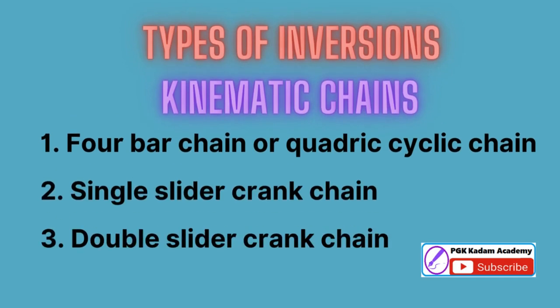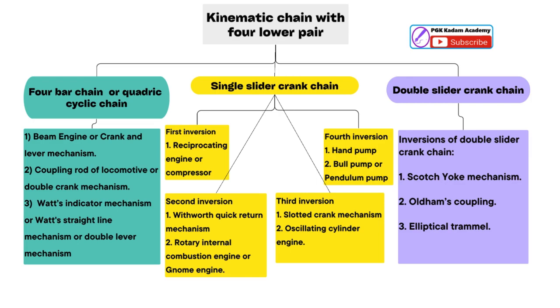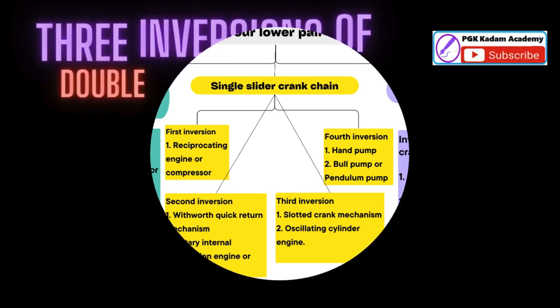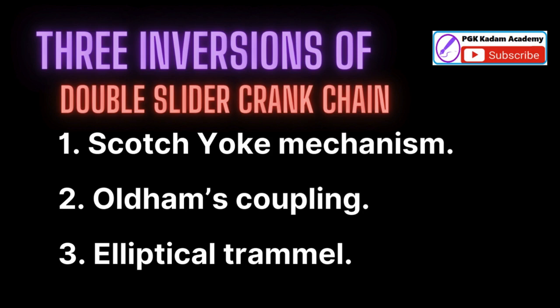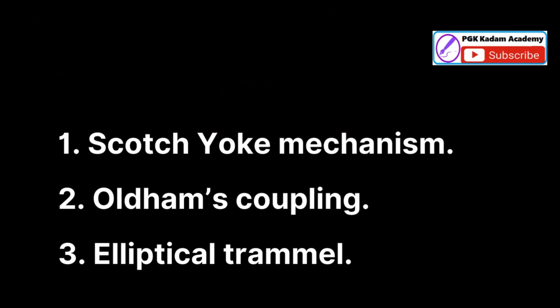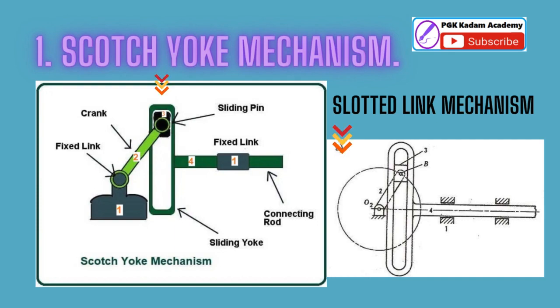Types of inversions in kinematic chains: 1. Four-bar chain or quadric cyclic chain. 2. Single slider crank chain. 3. Double slider crank chain. Inversions of double slider crank chain: 1. Scotch yoke mechanism. 2. Oldham's coupling. 3. Elliptical trammel. The first inversion of the double slider crank chain is the Scotch yoke mechanism, also known as the slotted link mechanism.